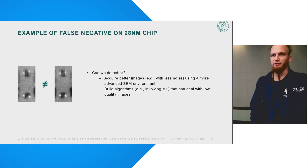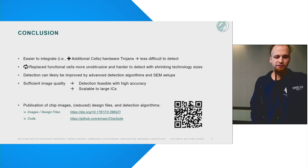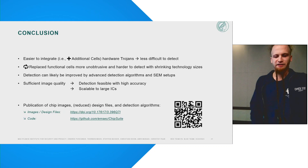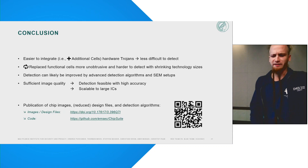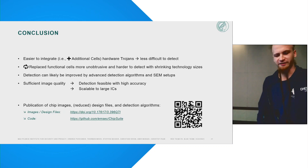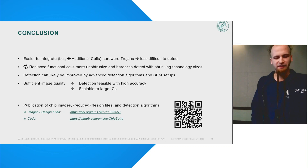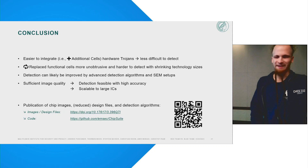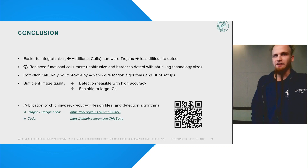Probably improved algorithms based on machine learning, or images from a better SEM environment, could improve that. To conclude, given sufficient image quality, it is possible to detect hardware trojans inserted just before the manufacturing step. Additional cells can be detected straightforwardly, while replaced cells present more problems in smaller and more complex chip technologies. Even the smallest hardware trojans tampering with only a single cell can be spotted using classical image processing algorithms. We also released all chip images, anonymized design files, and our algorithms for further research on our GitHub repository.